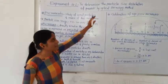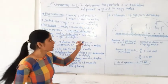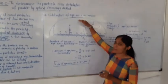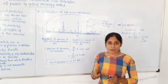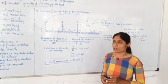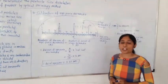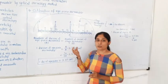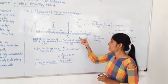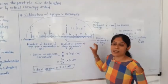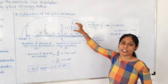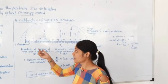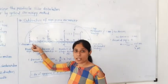For determination of particle size and particle size distribution, the first step of the procedure is calibration of the eyepiece micrometer. We use the eyepiece micrometer to determine the particle size, so before using it we must calibrate it. Calibration means determining the actual length between the two lines, or the actual length between two divisions.